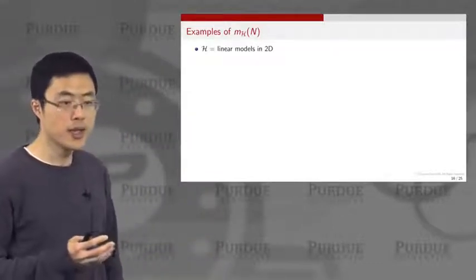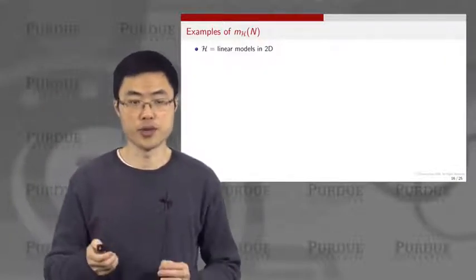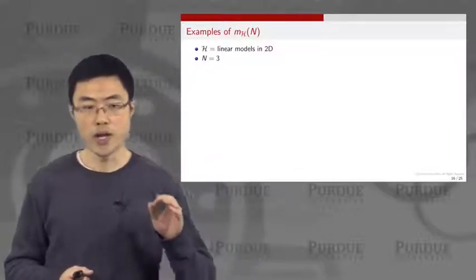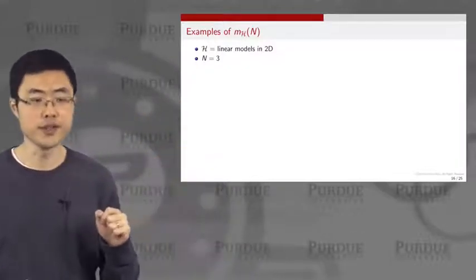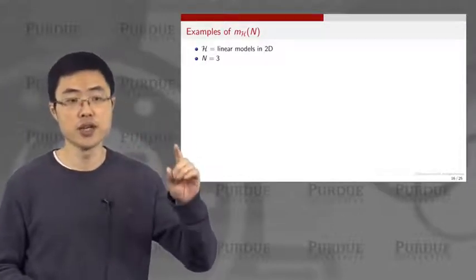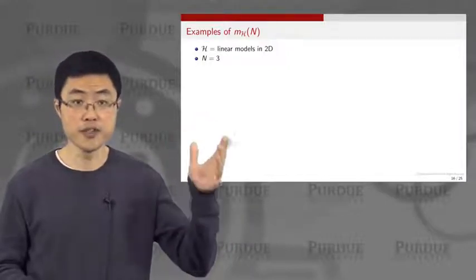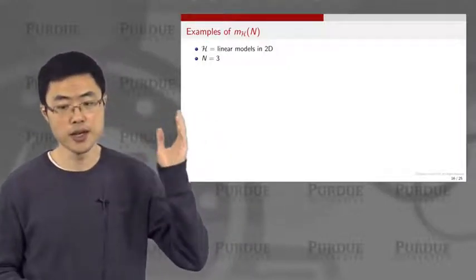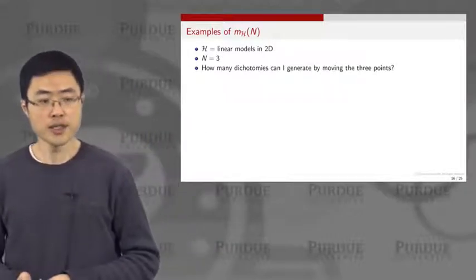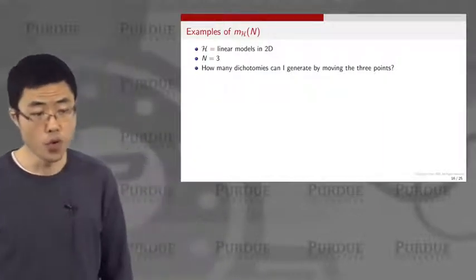The first example would be the set H being the linear models in two-dimensional space, and the number of data points would be 3. Why do I want to specify these two quantities? It's because my mH is a function depending on H and also n, and therefore I need to tell you my hypothesis set and also the number of training samples. I ask: what is the number of dichotomies that I can generate by moving these three data points?